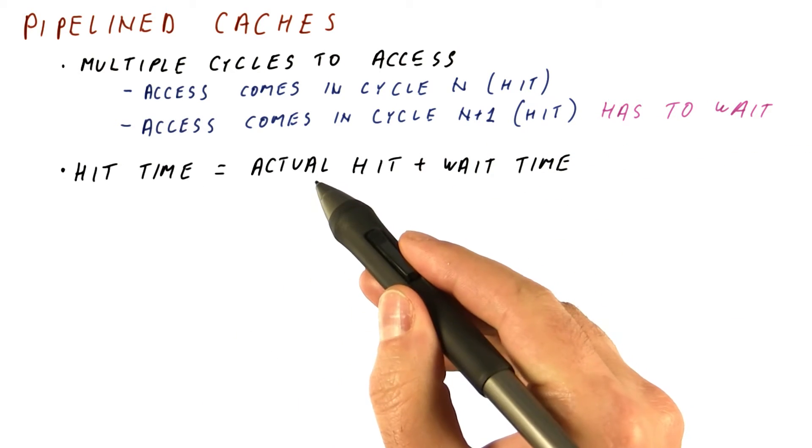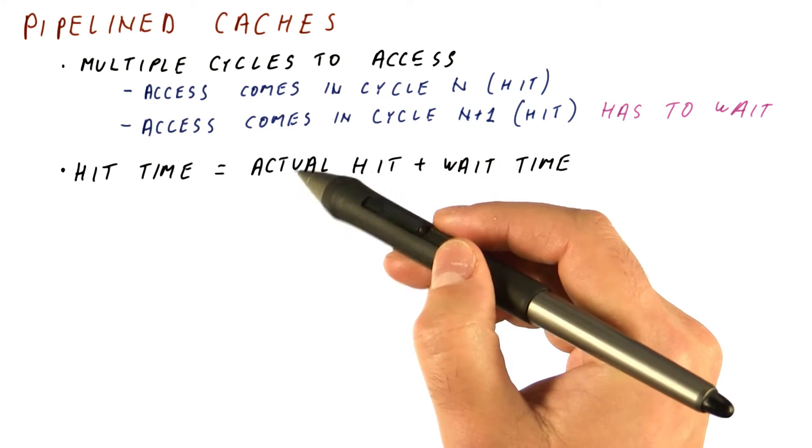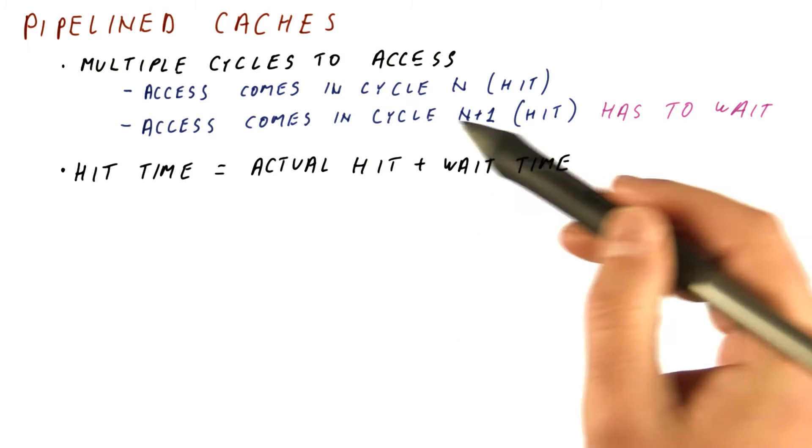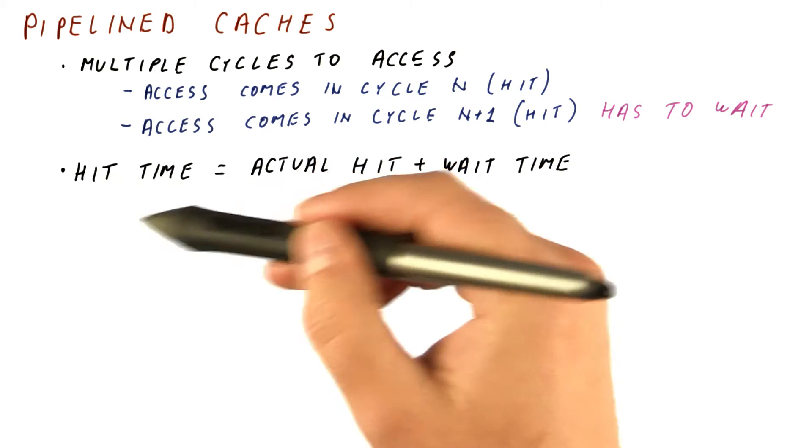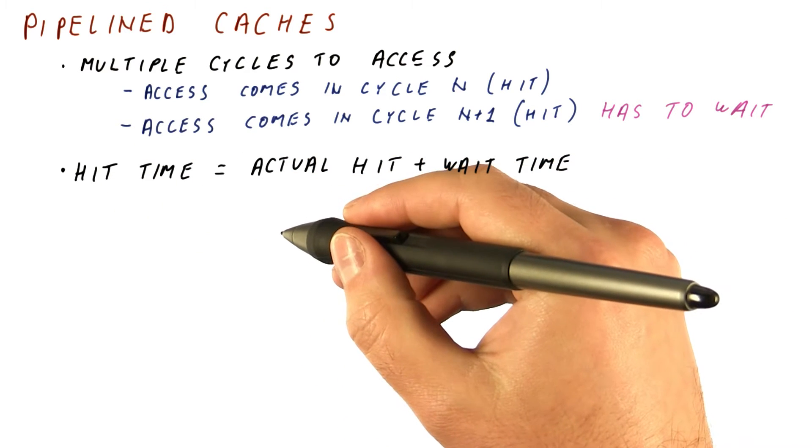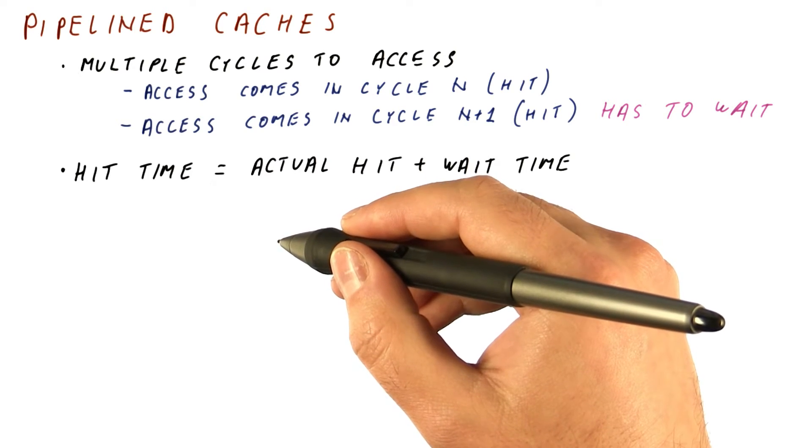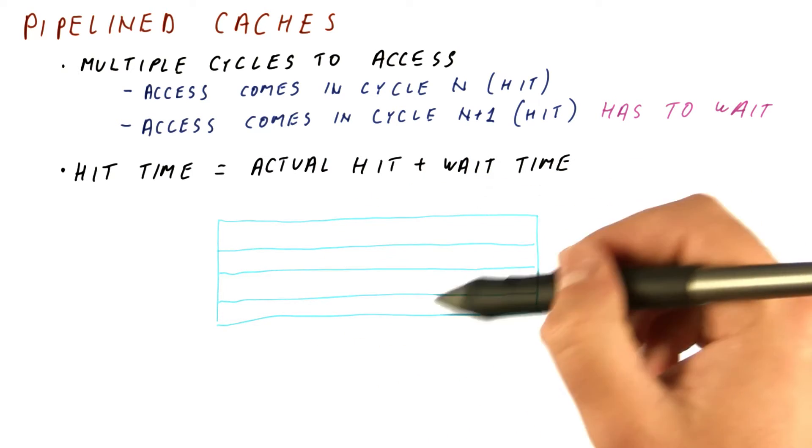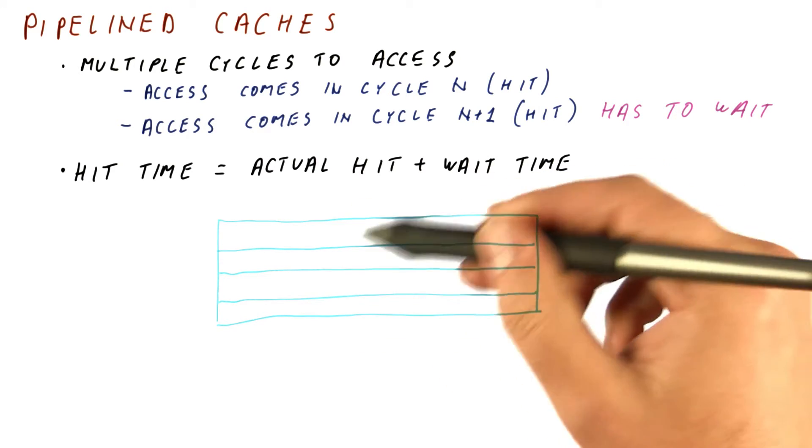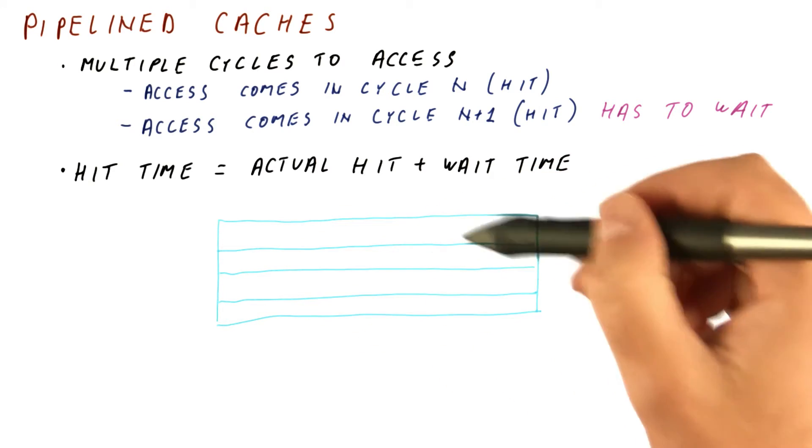And in that situation, pipelining the cache so that we can send in accesses one after the other will improve the overall hit time. Now, it may sound straightforward how to pipeline the cache. You just divide it into, let's say, three stages. But how do you split what amounts to basically a read from a large array? Because that's really what the cache is.